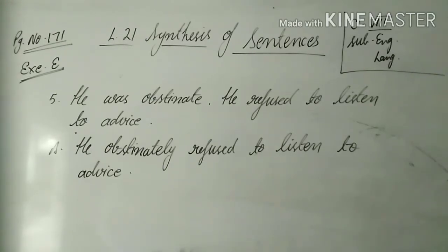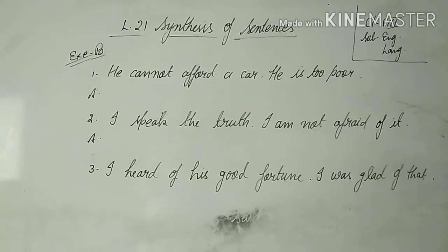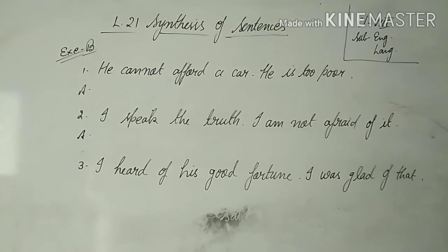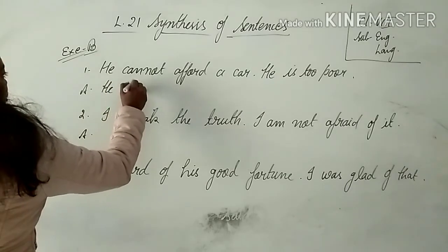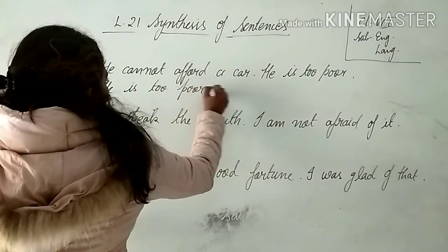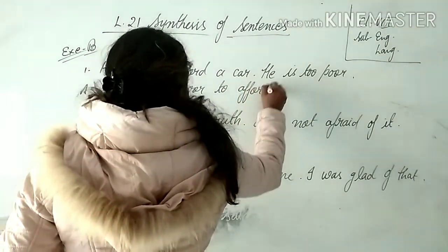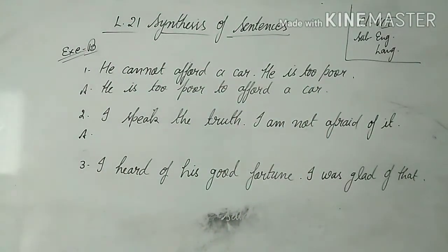In the next video we will do exercise B. Exercise B: 'Combine each set of sentences into one simple sentence by using infinitives.' An infinitive means 'to' plus the first form of the verb. First question: 'He cannot afford a car. He is too poor.' Answer: 'He is too poor to afford a car.'